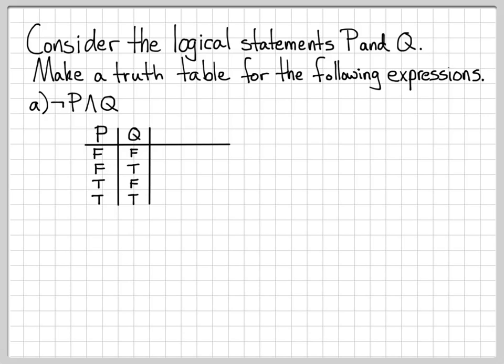The order that we do these is definitely arbitrary — we could do it in a different order. But doing it in this order, where we start with all false and then go to all true in this sequence, if we all agree this is the correct order, it's easier to compare results if everybody uses this convention.